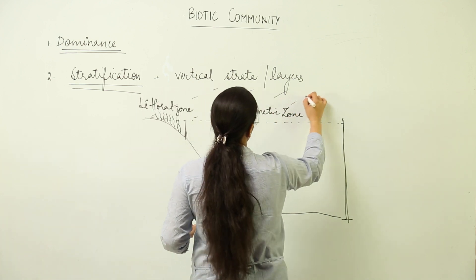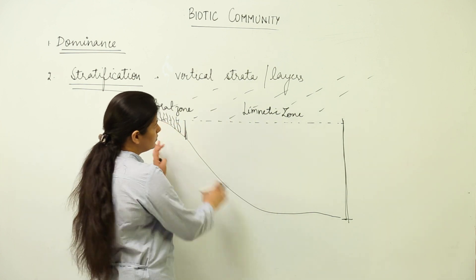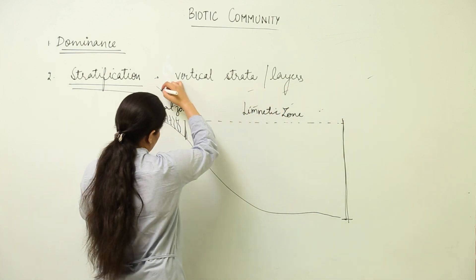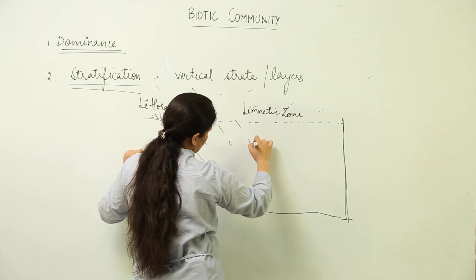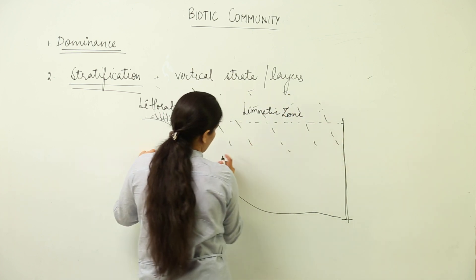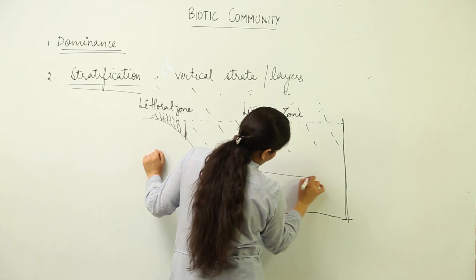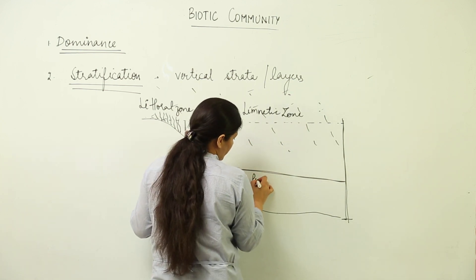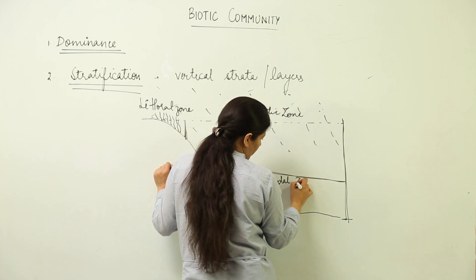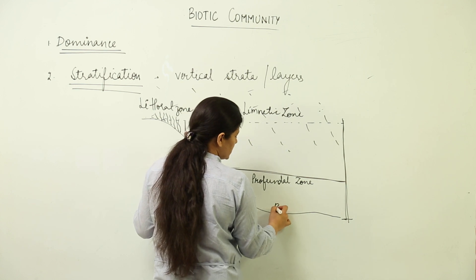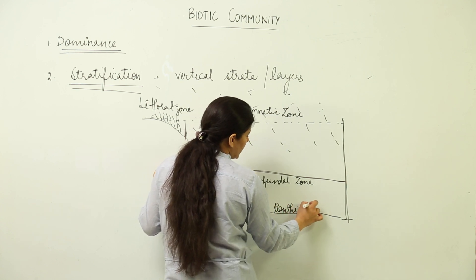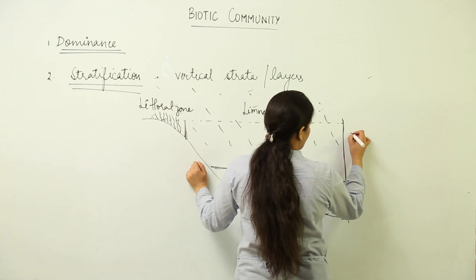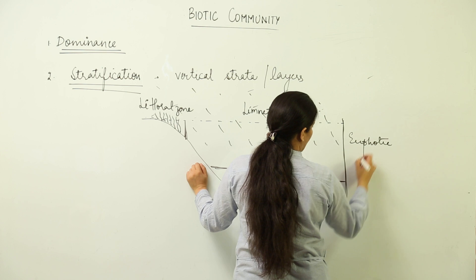Sunlight falls on the limnetic zone and penetrates to a certain depth. Beyond that depth there is the profundal zone. The base of the lake is termed the benthic zone. In the illuminated part there is a region that is euphotic, and below that is the dysphotic region.